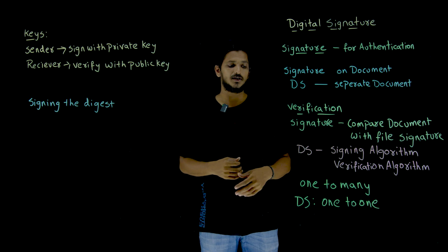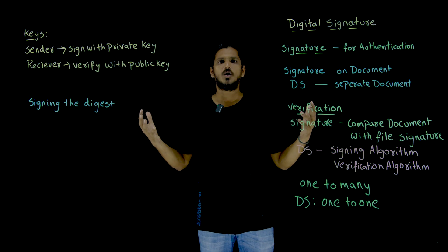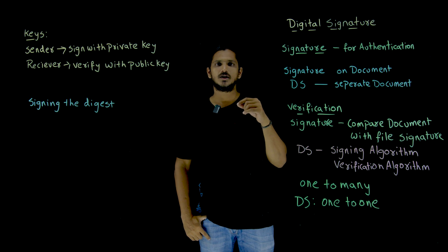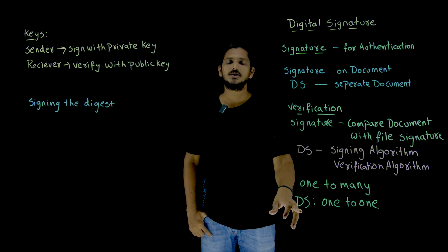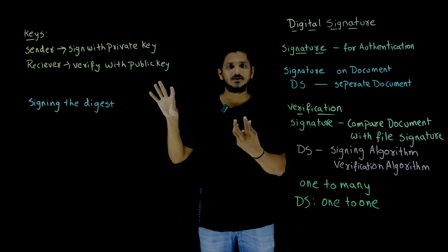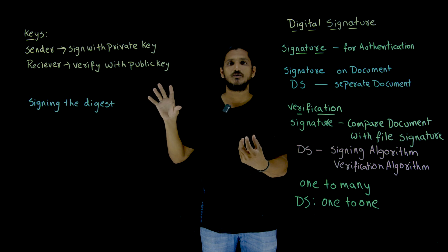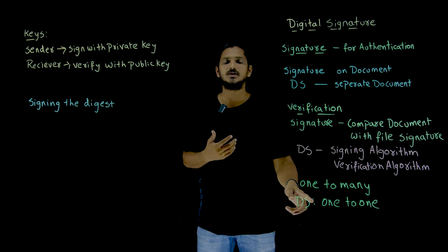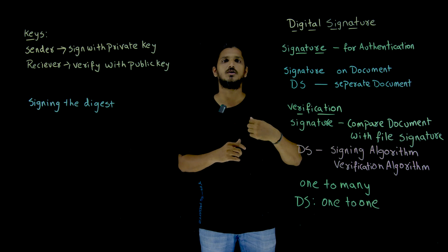One more point you need to understand: normal signatures are one-to-many, meaning you take multiple documents and do the same signature — one signature signed on multiple documents. But in digital signatures it is one-to-one. You take a message, for that message you generate a signature. You take another message, you generate a new signature. That's why digital signatures are one-to-one, while normal signatures are one-to-many.